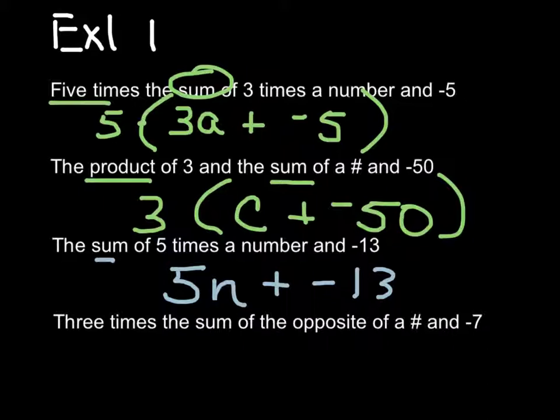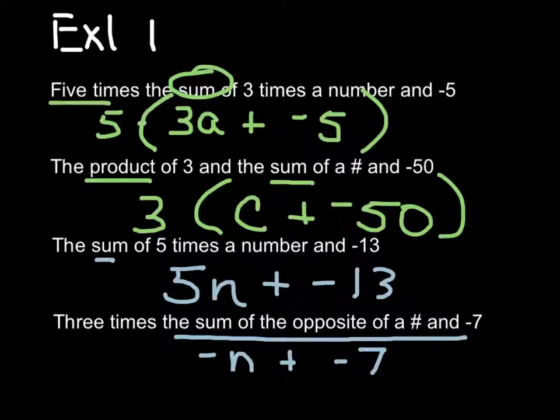And finally, in the last example, 3 times the sum of the opposite of a number. So, I'm going to take the opposite of a number and a negative 7. And I'm going to add those together, because they want the sum of the opposite of a number and a negative 7. And what am I going to do to that sum of the answer? I'm going to take 3 times that.